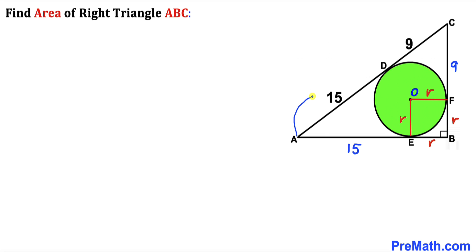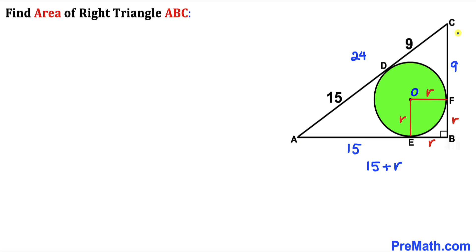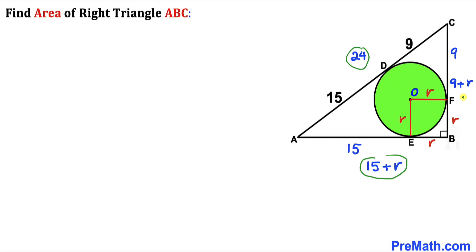The longest leg AC has a total length of 15 plus 9, which equals 24 units. The base AB equals 15 plus r, and the height BC equals 9 plus r. So the dimensions of the right triangle are: hypotenuse AC = 24, leg AB = 15 + r, and leg BC = 9 + r.